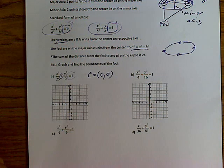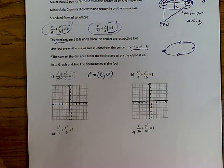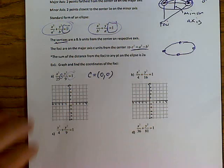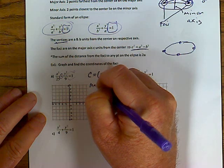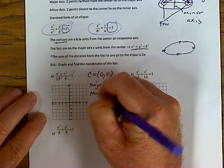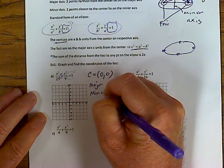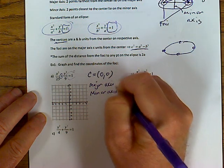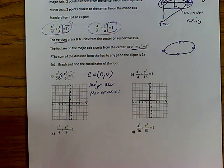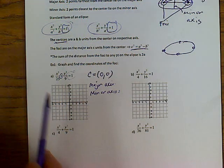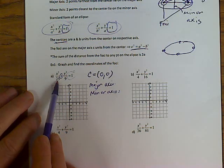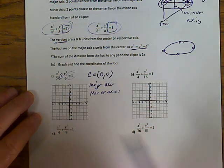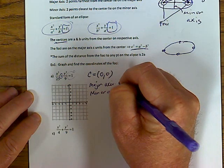It should make sense that the center of the ellipse is (0, 0). Now the next thing you look for is the major and minor axis. The major axis is the one that has the biggest number on the bottom, so x has the biggest number underneath it — the major axis is going to be x.